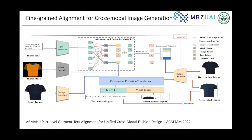In the first stage, an image mask encoder and a text encoder are used to encode the masked image and the corresponding text. An image quantizer is used to generate garment tokens to facilitate training. The mask and text tokens are aligned using our proposed mask-CLIP, and the most relevant text for a mask token is fused with the image token. After fusion, the token is used to obtain a latent z, and finally a cross-modal codebook is obtained after training.